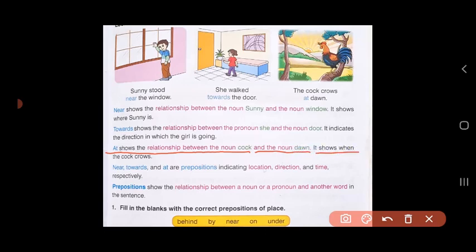Now let's do exercise 1. Fill in the blanks with the correct prepositions of place. The words given are behind, by, near, on, under. First one: the king built his palace, dash the banks of the river. The king built his palace on the banks of the river.